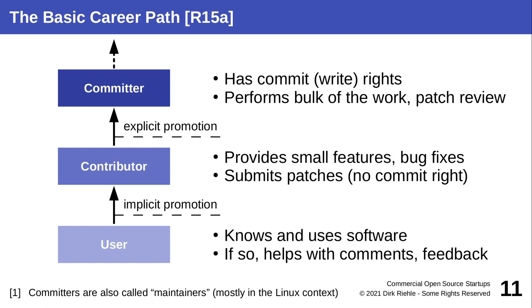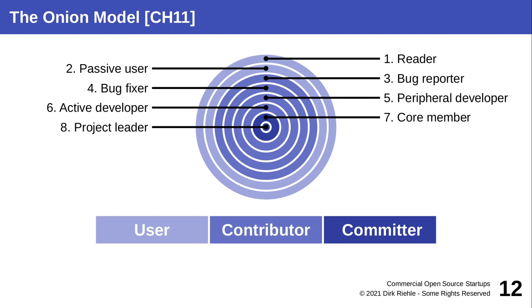So the basic career path is from user to contributor to committer — the roles or career stages you can take inside an open source project. You can make this more elaborate by adding more in-between stages. A well-known way is the onion model, where you advance from the outside to the core of the project. You might start as a reader, then a passive user, bug reporter, bug fixer, peripheral developer, active developer, core member, and eventually project leader — though it's still essentially three stages, just more fine-grained.